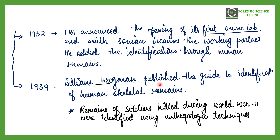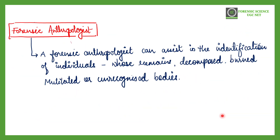In 1939, William Krogman published a complete, full-fledged guide to the identification of human skeletal remains, providing anthropological techniques to identify unidentified bodies and skeletal remains. These techniques were also used to identify soldiers killed during World War II, where dead bodies were identified using anthropological methods.